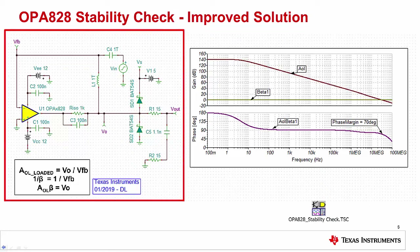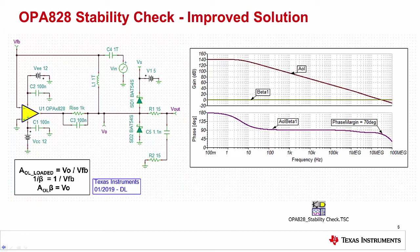Shown on the left is the standard circuit used to test stability. It is essentially the amplifier in an open loop configuration with an injected test signal. The stability curves are generated using post-processing on the VFB, VO, and Vout test probes in the circuit. The equations used for post-processing are shown below the circuit. They include AOL, 1 over beta, and AOL times beta.